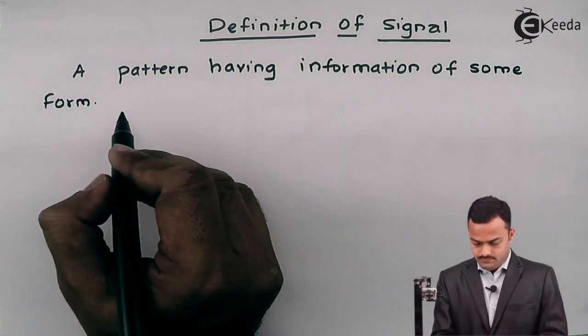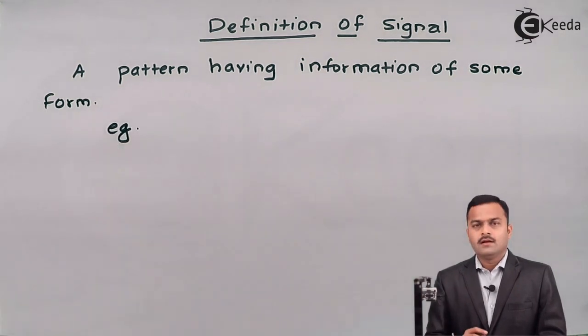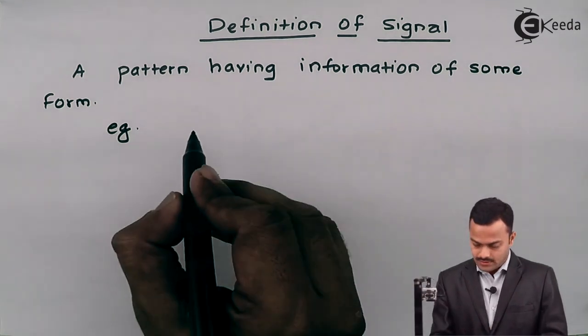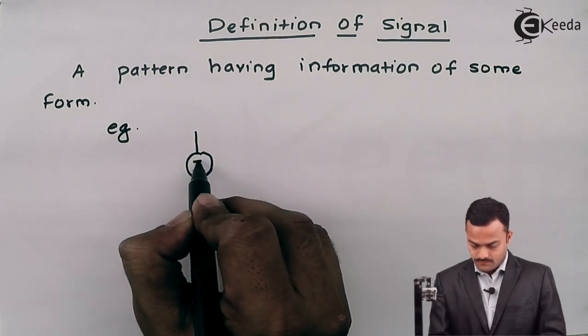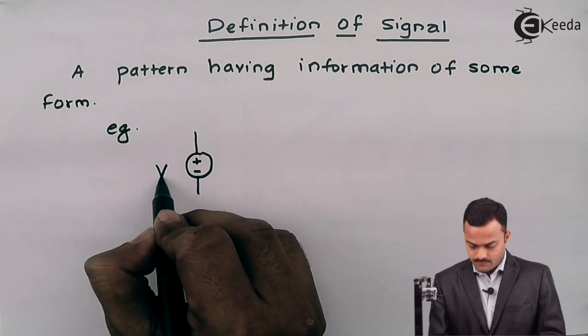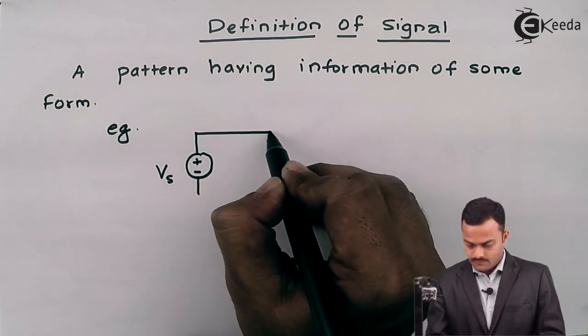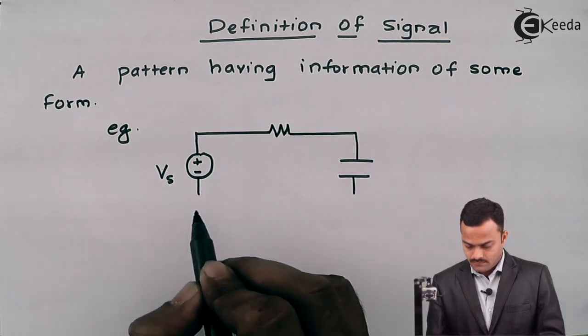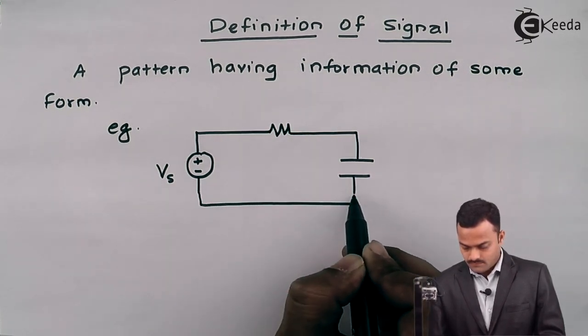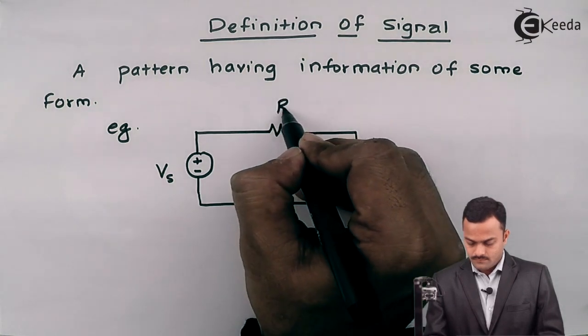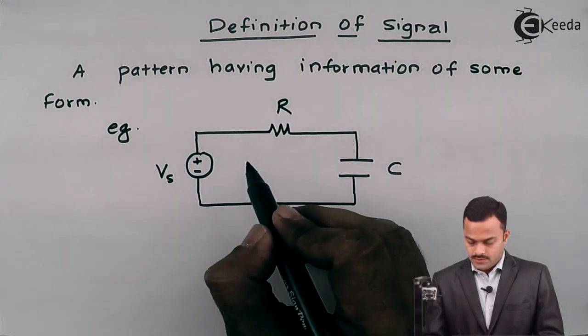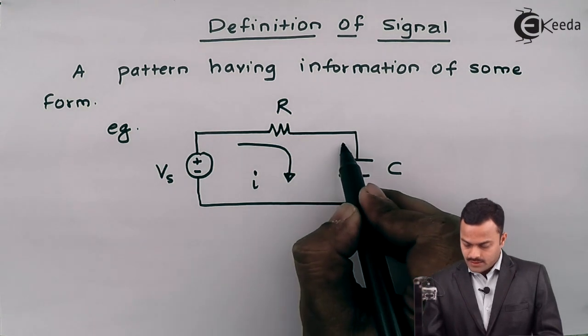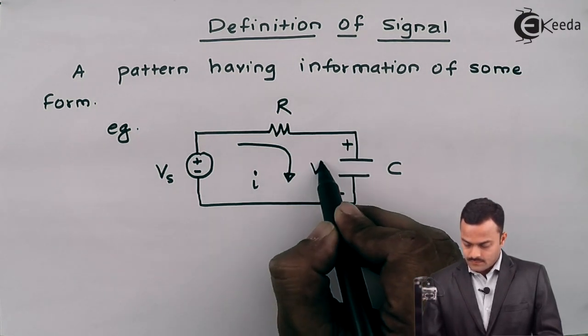Let me give an example. I will consider a simple RC circuit excited by a voltage source like this. There will be a current I flowing and that will develop a voltage across capacitor VC.